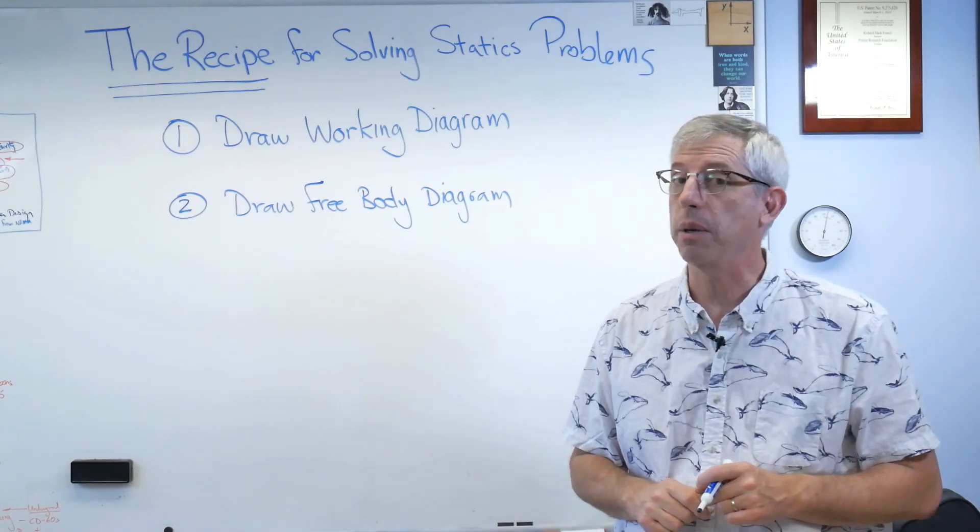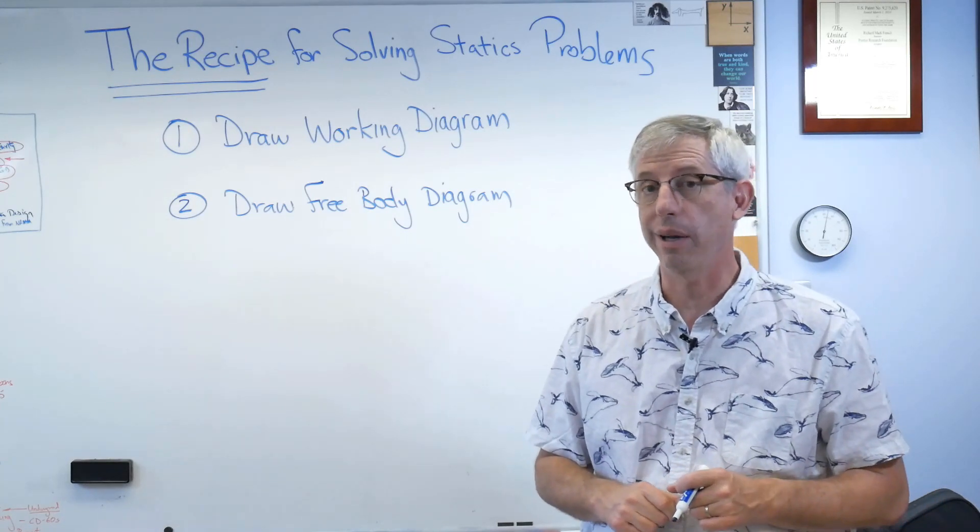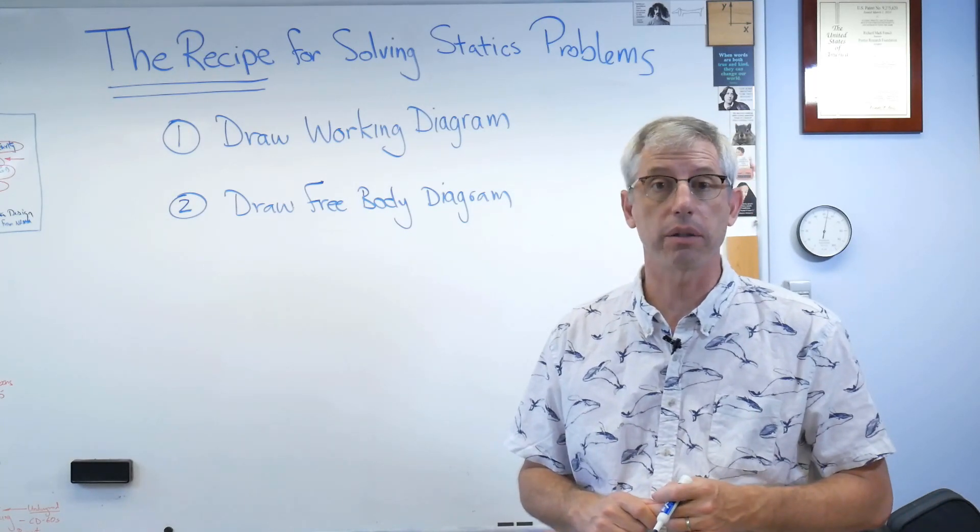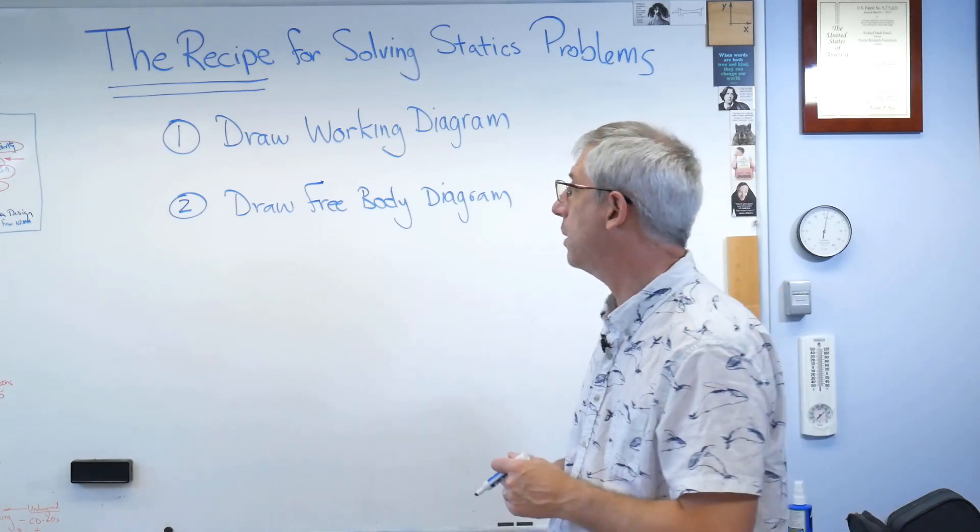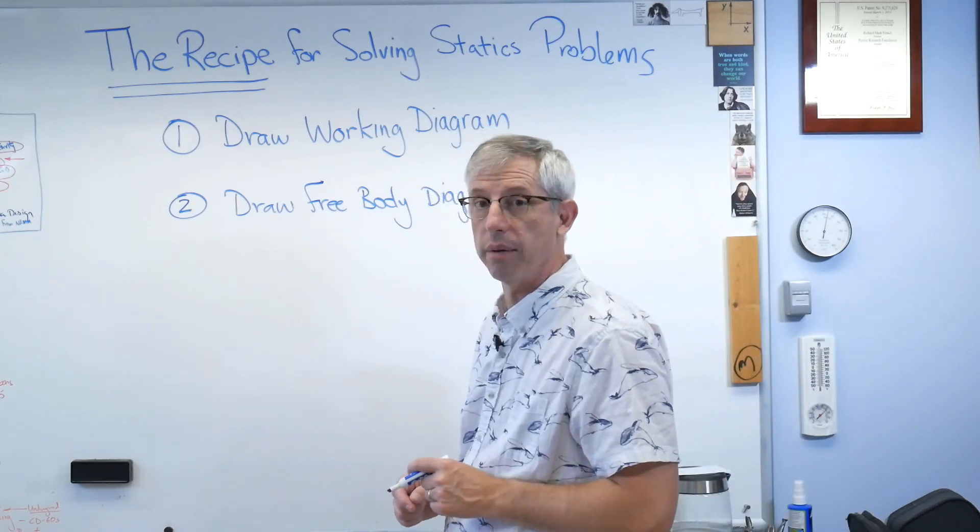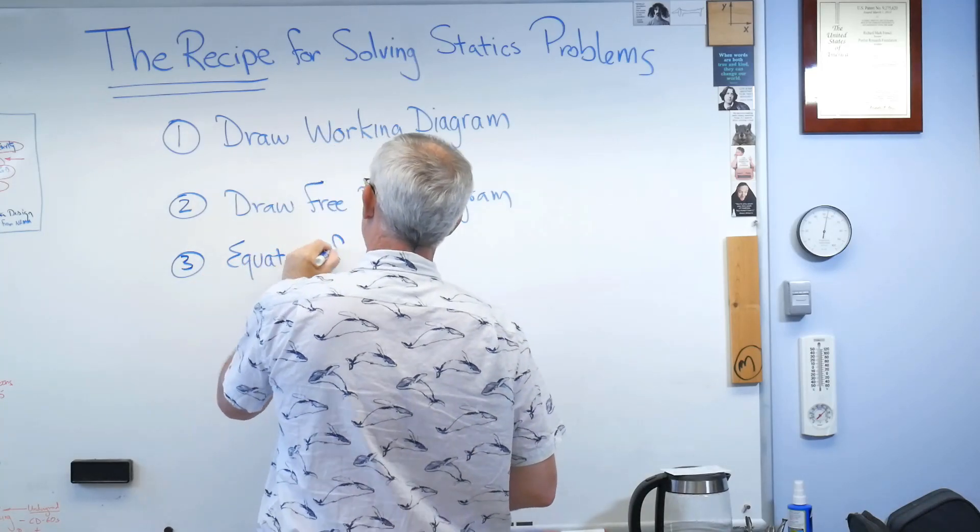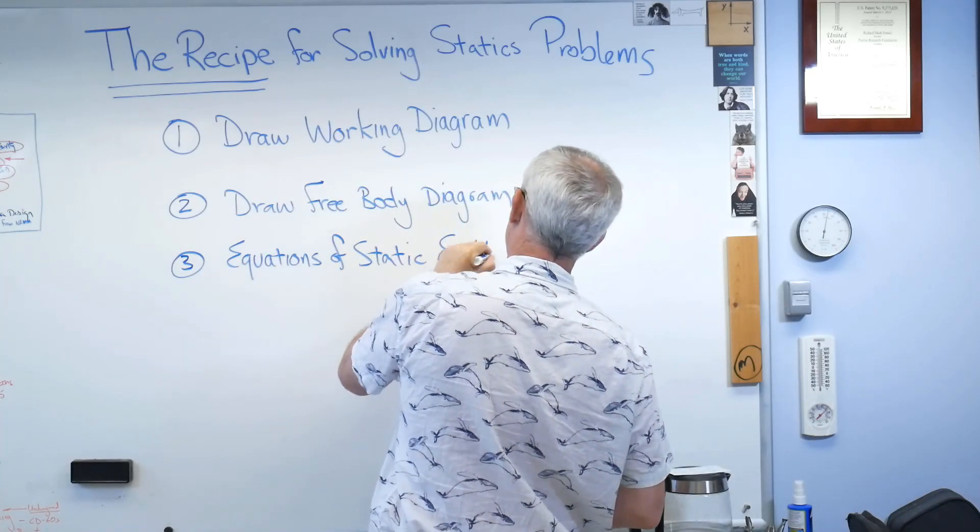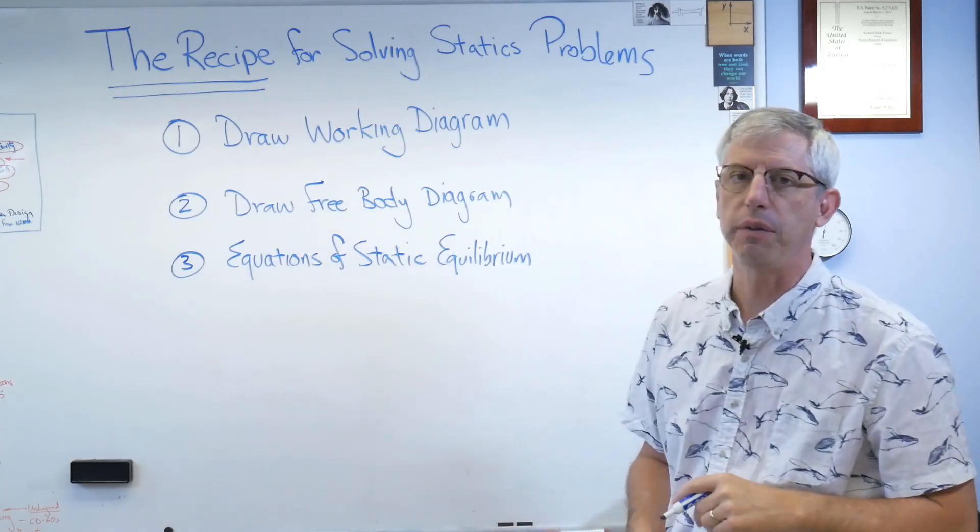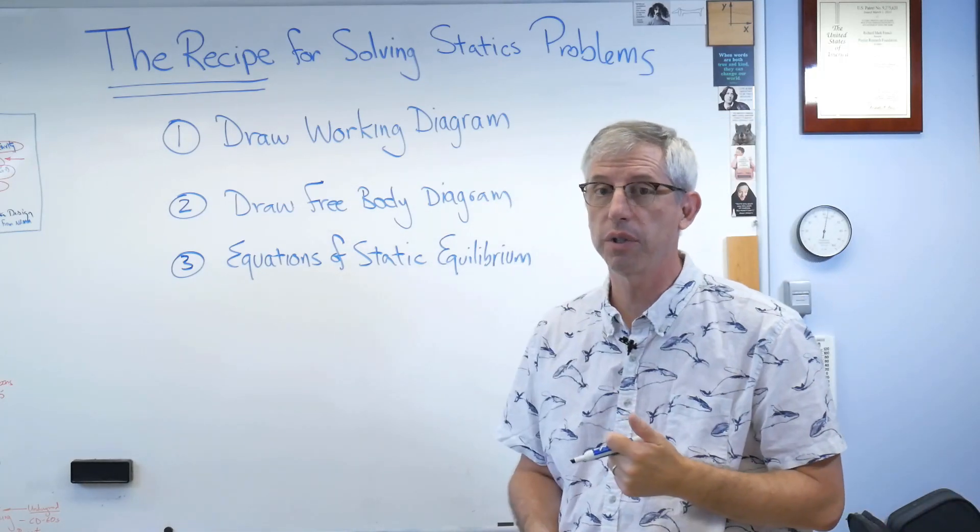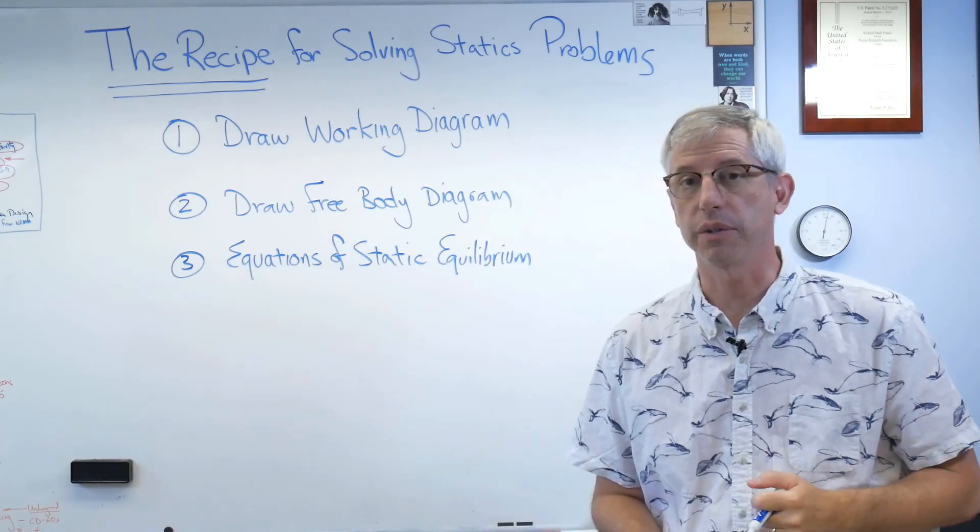Also, the free body diagram has a positive sign convention drawn on it. You got to know what positive x and positive y are, okay? There's step two. Step three, write your equations of static equilibrium. Now, that's a 50 cent term for sum of the forces equals zero and sum of the moments equal zero. That's it.